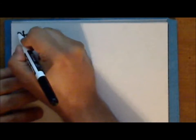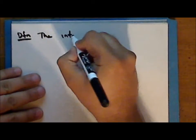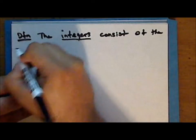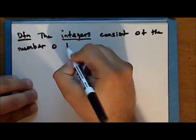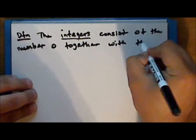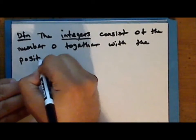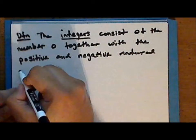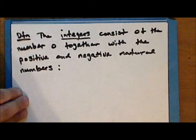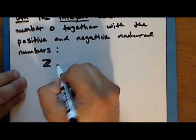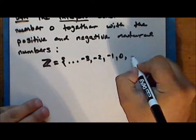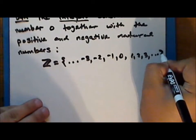The next set of numbers we will define are the integers. The integers consist of the number 0 together with the positive and negative natural numbers. The symbol for the set of integers is an ornate or blackboard bold letter Z. This is the set of all positive and negative natural numbers together with 0, beginning from negative infinity: negative 3, negative 2, negative 1, 0, 1, 2, 3, and so on to positive infinity in increments of 1.